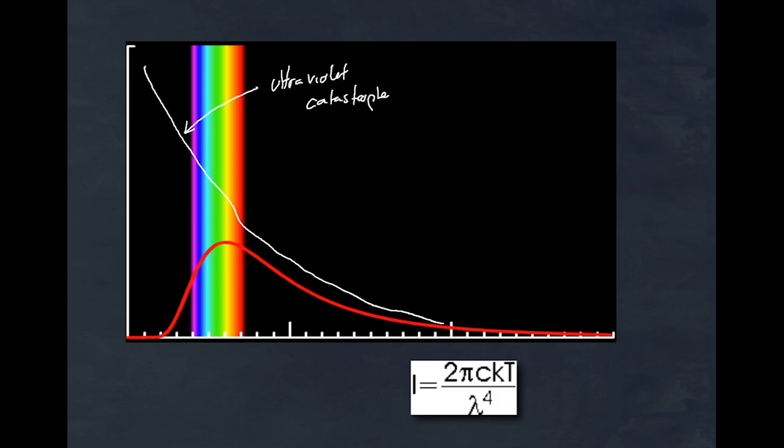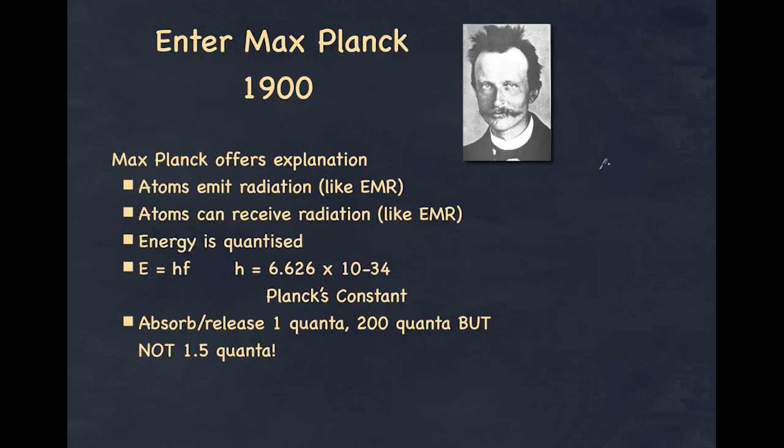Along comes Max Planck in 1900. Max Planck was perplexed by the inability of the physics understanding to explain the experimental evidence of the black body radiation curve. He offers an explanation. He says well atoms can certainly emit radiation, it's ultimately atoms releasing electromagnetic radiation, and certainly atoms can receive radiation.